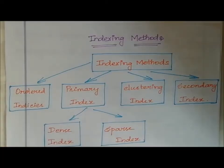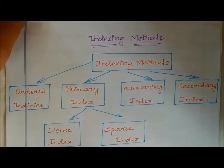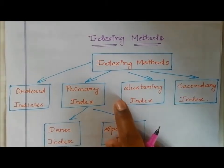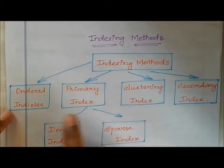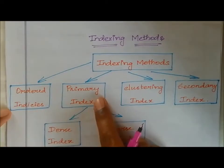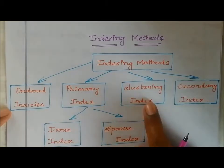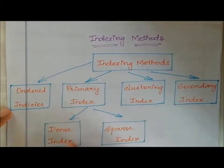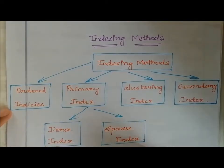In this video we are going to see the topic of indexing methods. There are four types of indexing methods: ordered indices, primary index, clustering index, and secondary index. The primary index has two subtypes: dense index and sparse index.